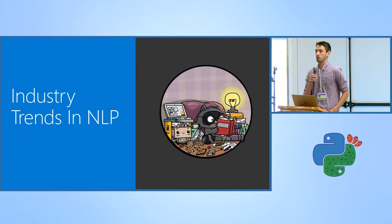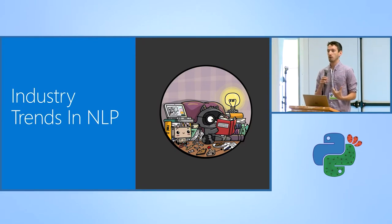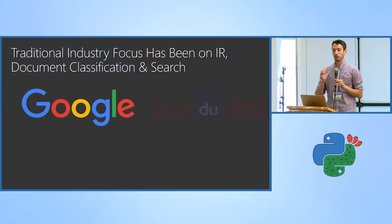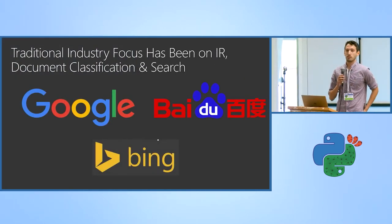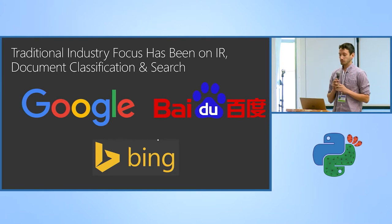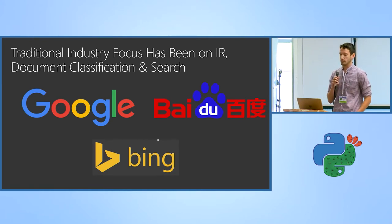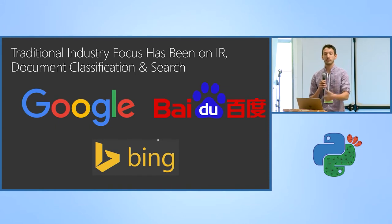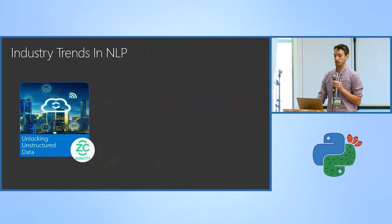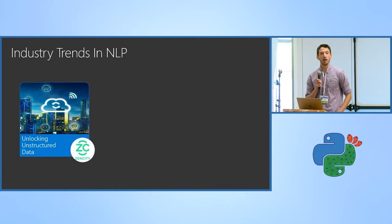It's important to take a step back and ask why NLP is important. Traditionally, NLP in industry has been focused on information extraction, document classification, and search — you might see it in major search engines like Baidu, Google, and Bing. But recently we've been seeing a lot of other key industry trends in NLP that have fueled a lot of the interest and research in the field.